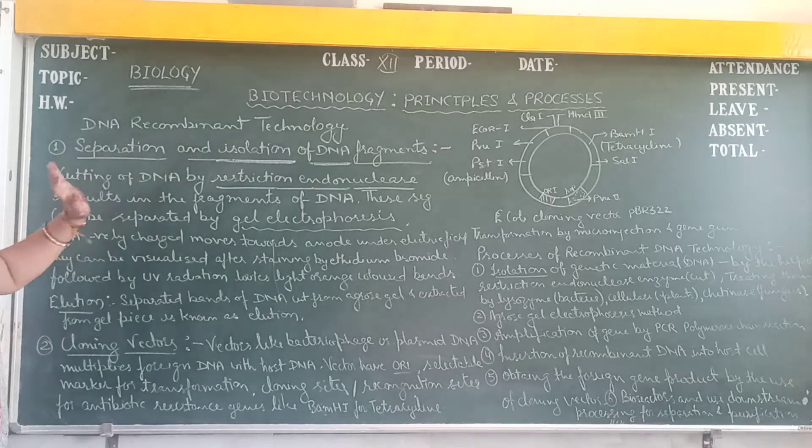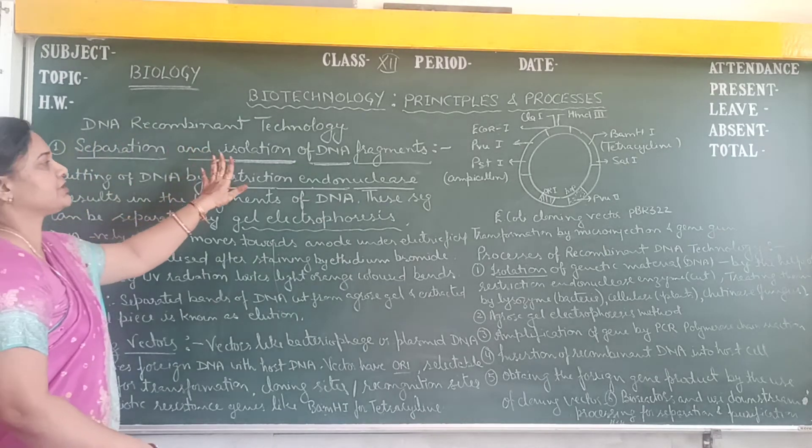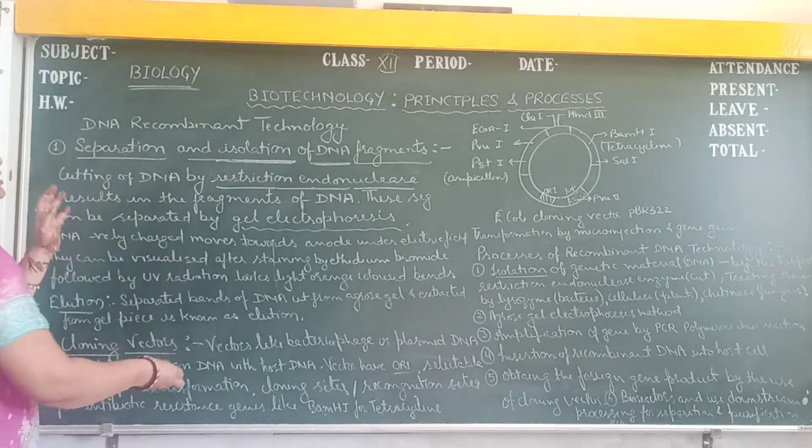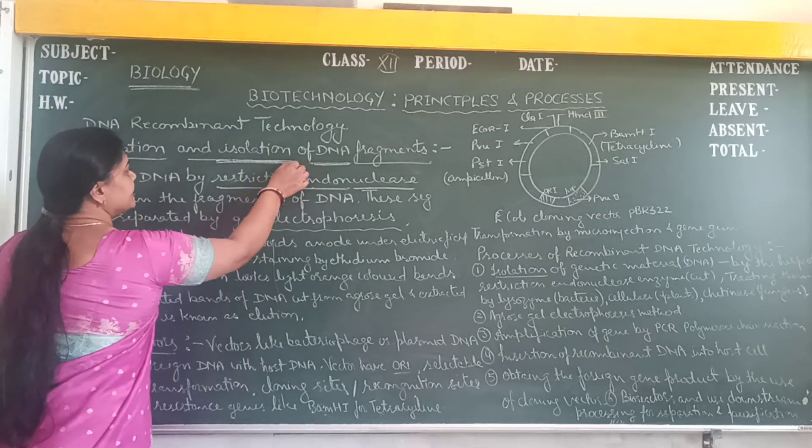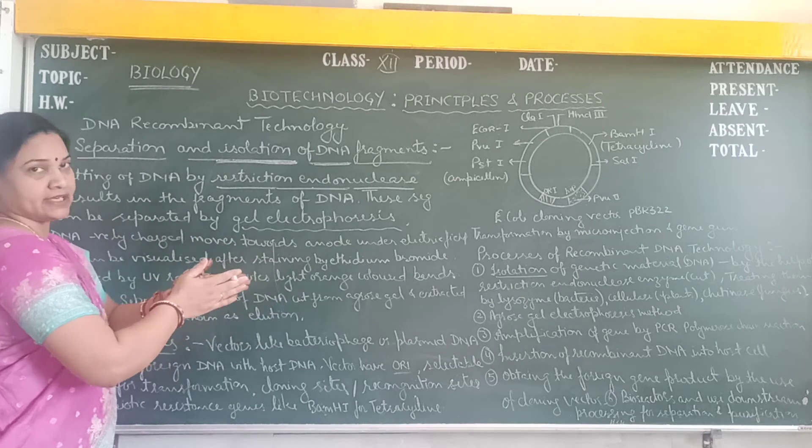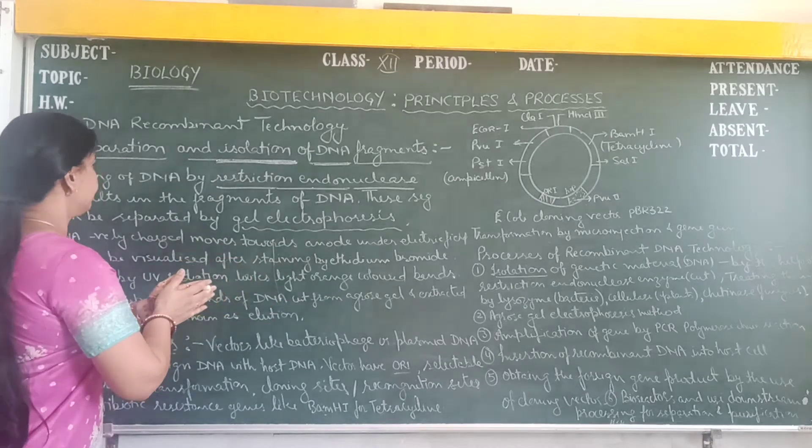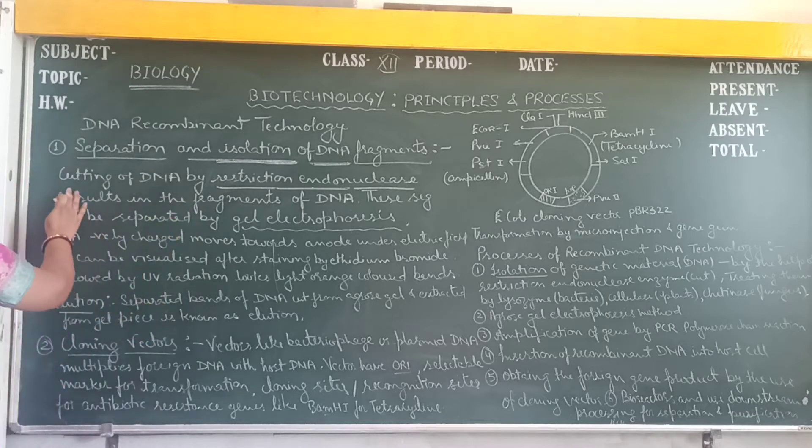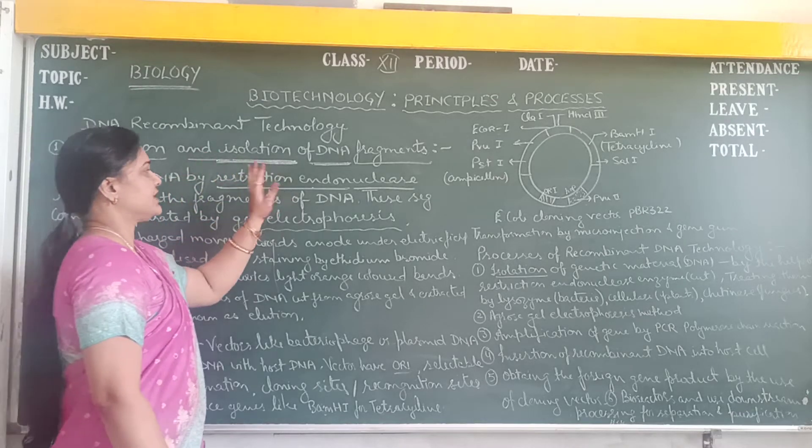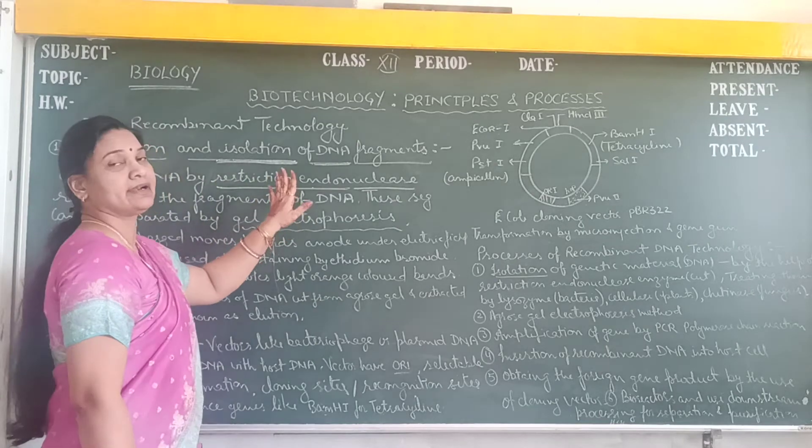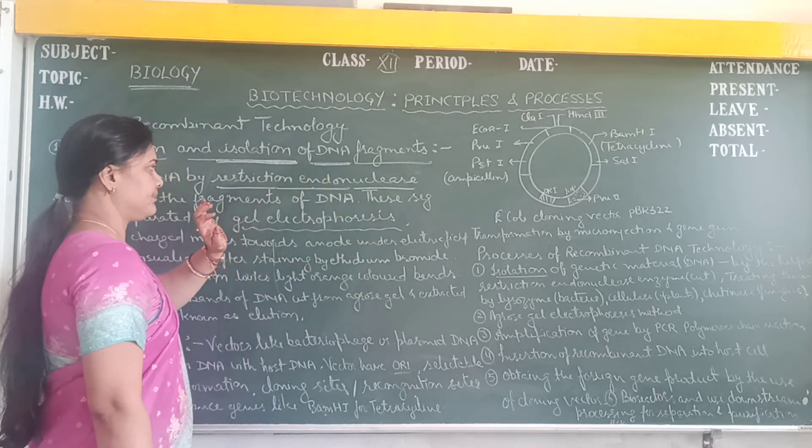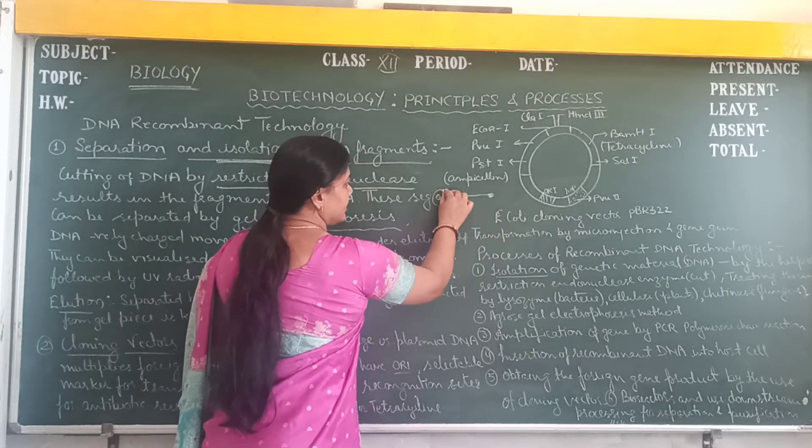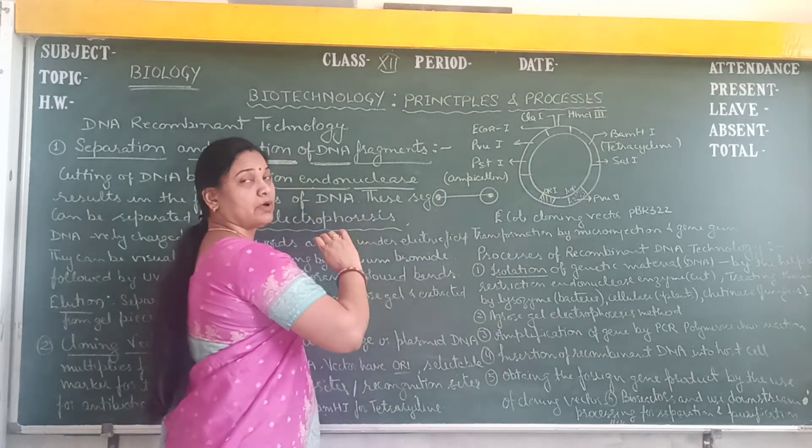We are learning DNA recombinant technology. The first step of DNA recombinant technology is the separation and isolation of DNA fragments. First, we have to isolate the DNA fragment from the foreign organism, from both the ends.